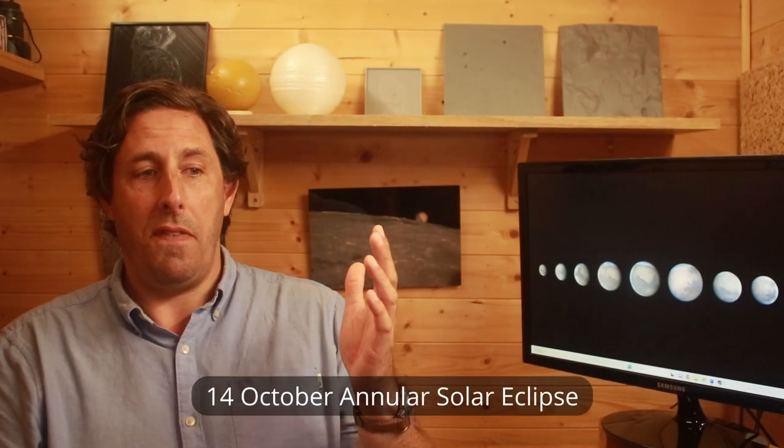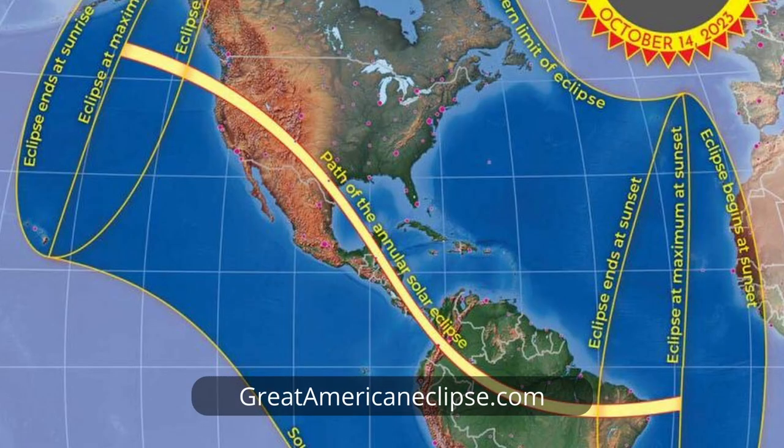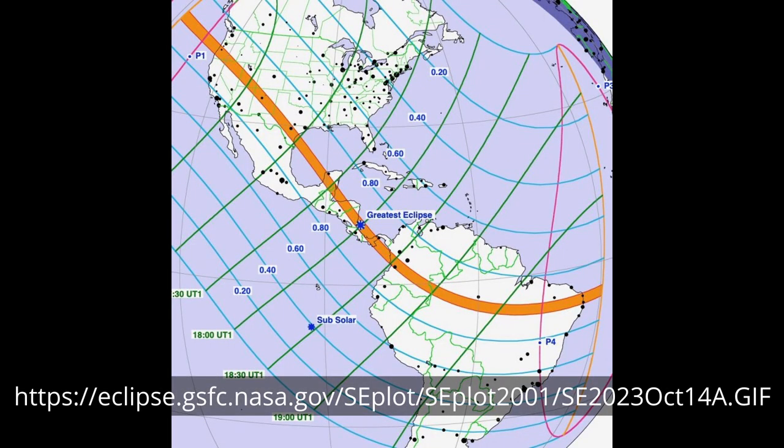If you have your diary with you we've got the 14th of October sees an annular eclipse across the United States, across Central America and finishing in Brazil and that means that the partial solar phases are pretty much seen from all the way across the Americas.